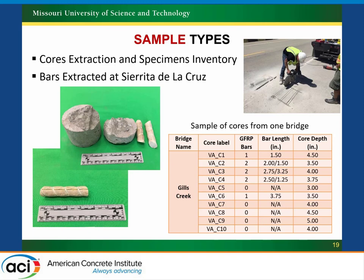To give you a flavor of some of the tests done: some bridges we were able to take more cores, some fewer. One difficulty is determining where to get an actual FRP bar when taking a four-inch diameter core — some cores had no cross-section of bar. In the future, it would be nice to develop non-destructive technologies to determine bar locations for better accuracy. Care is taken when extracting samples from the concrete.